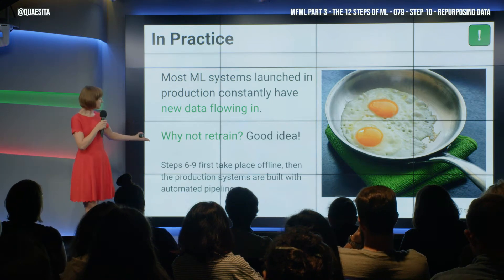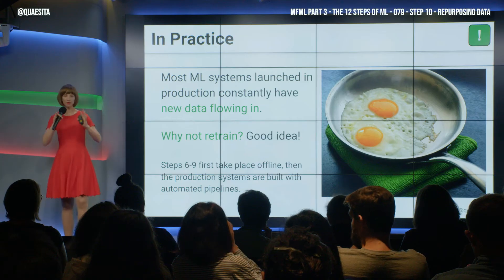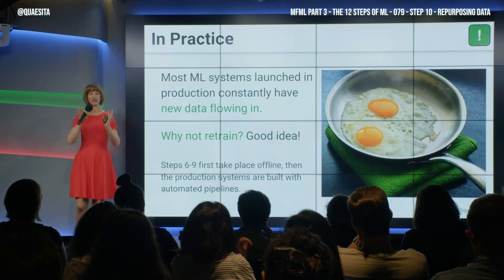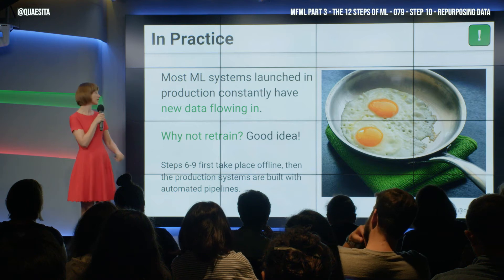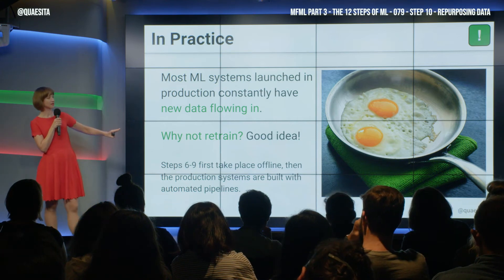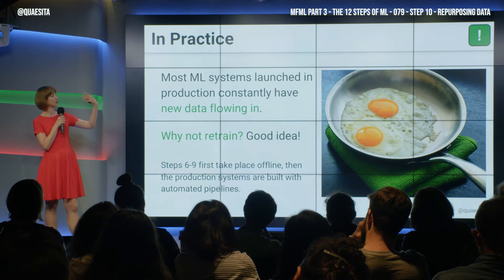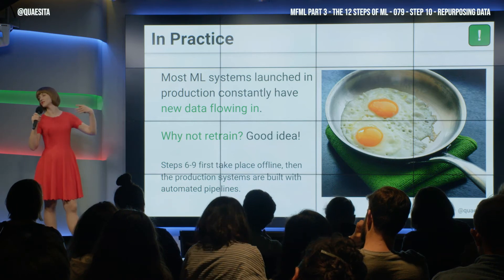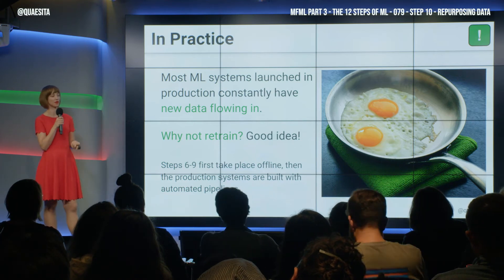Steps six through nine, what we looked at, they tend to take place offline. That prototyping tends to be an offline thing where you've got that static data set — you play with it, you split it. But then after that, you now have new data flowing in and you can adjust your solution based on what's flowing in.